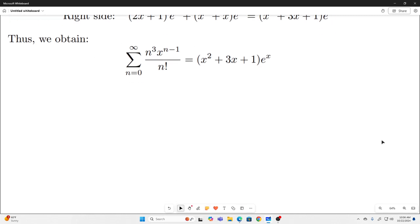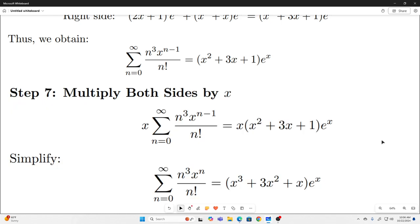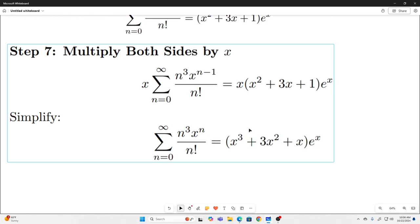And then we do the same thing again, multiply both sides by x and simplify. And we just end up with this.